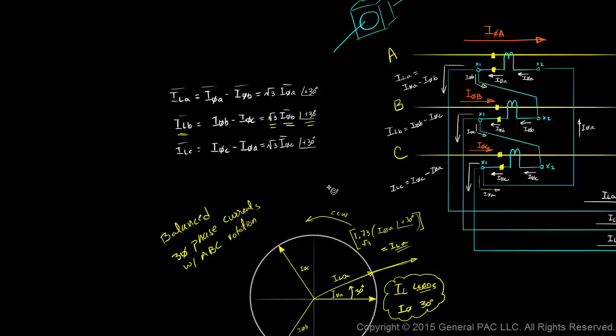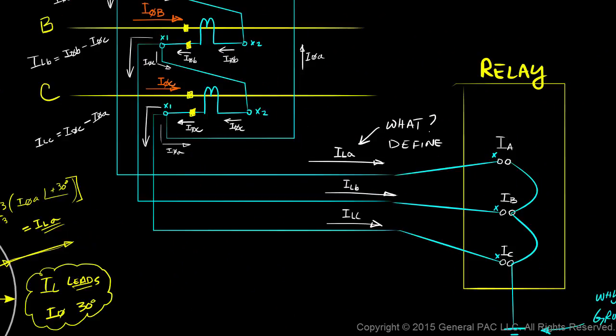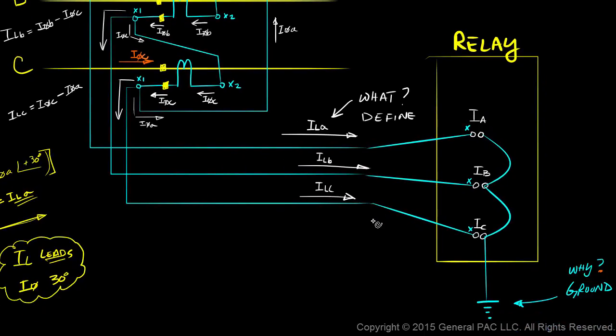Alright, so the last part of this video is essentially what happens to this line current. Now that we've defined this line current, what happens to this line current when the non-polarity side of our input terminal are connected like this? Okay, so we know that line current a is going into the polarity side of the input terminal for phase a. Which means line current a is also flowing out of the non-polarity side of the input terminal. Similarly, the current that's flowing out of the non-polarity side of our phase b input terminal is line current a plus line current b.